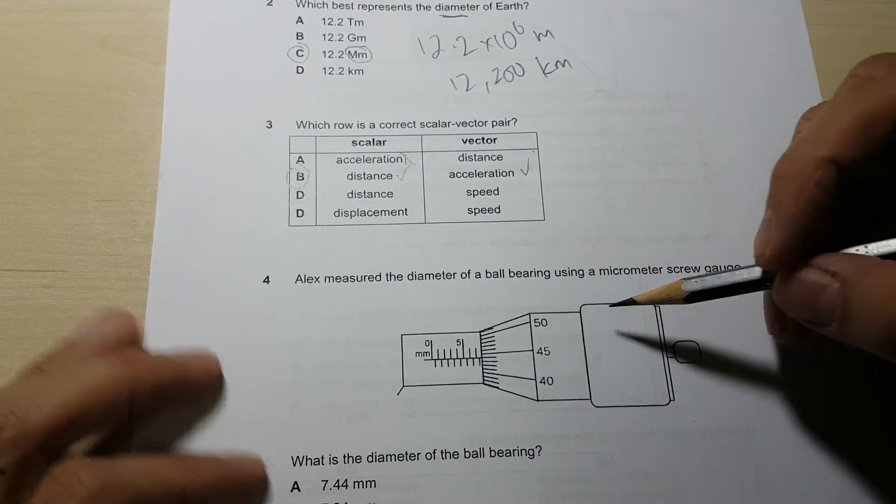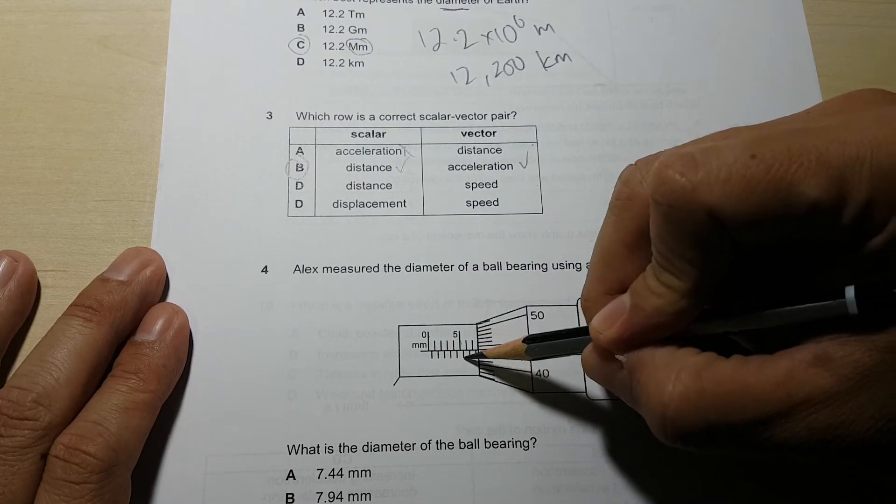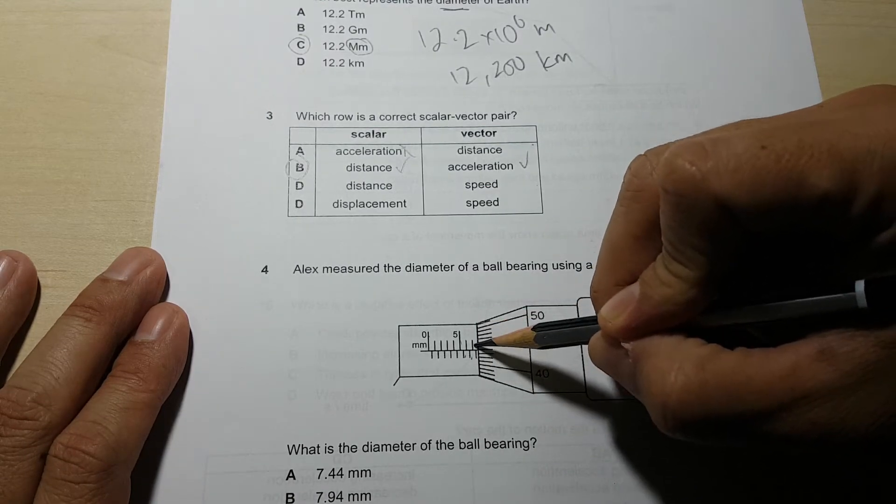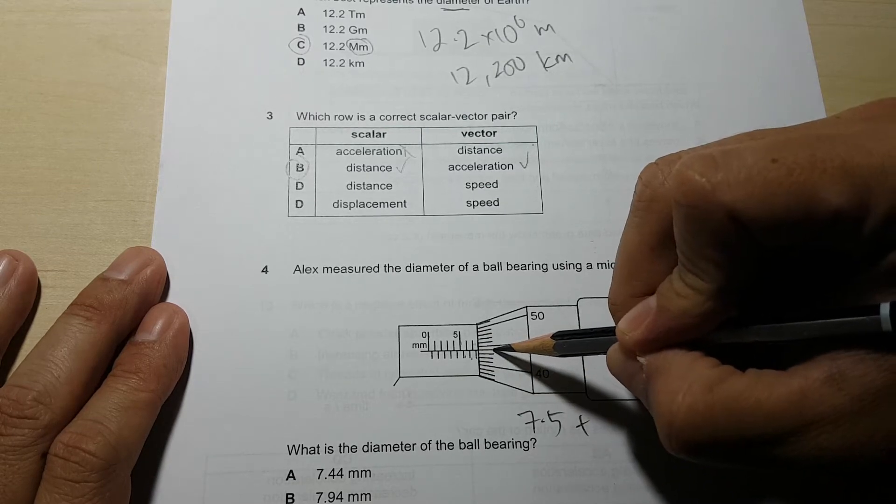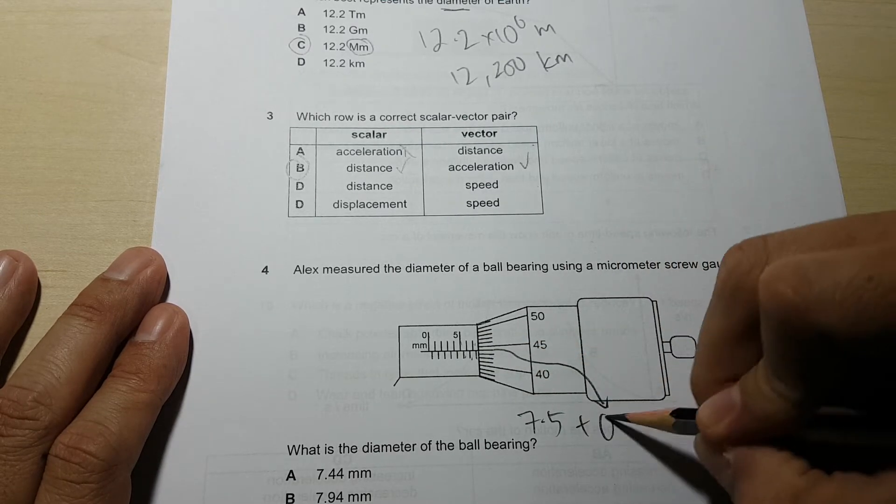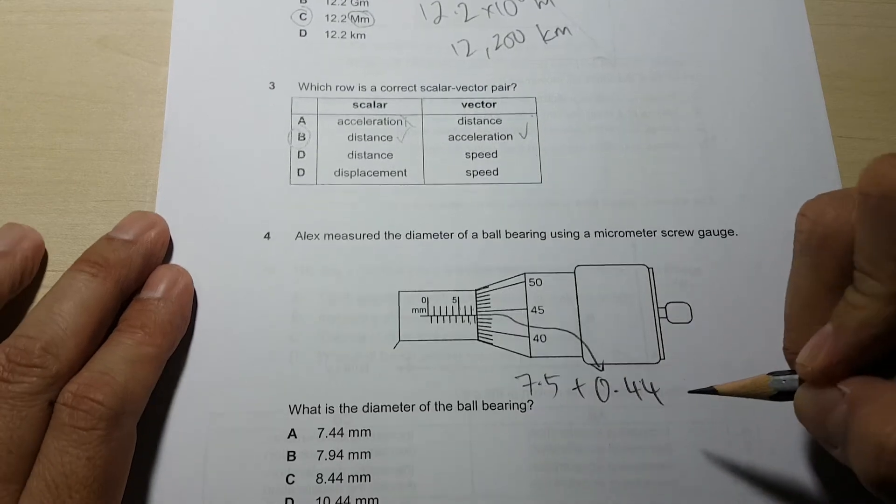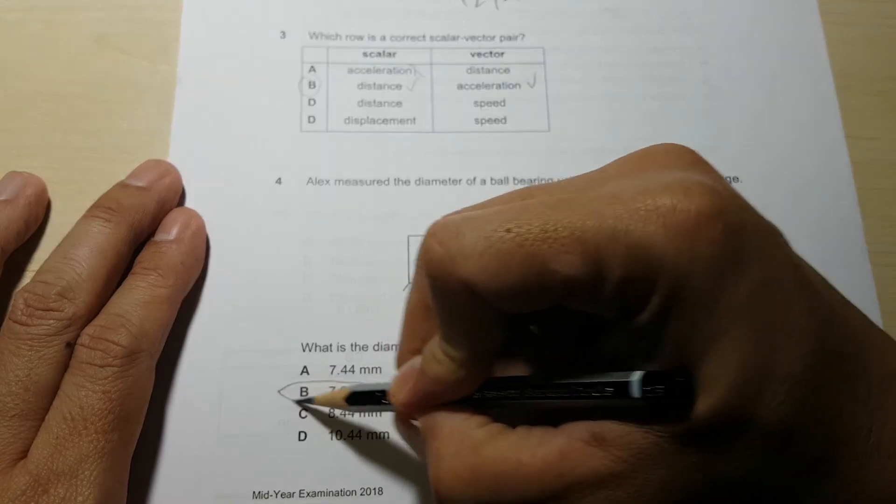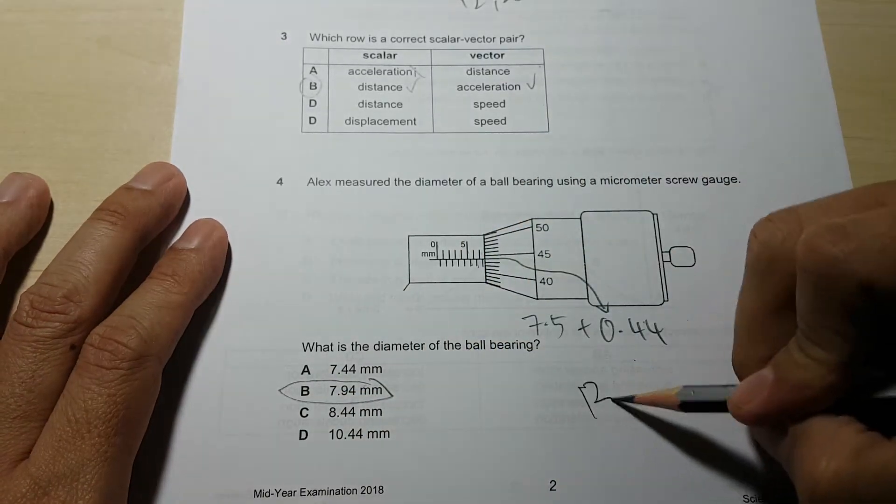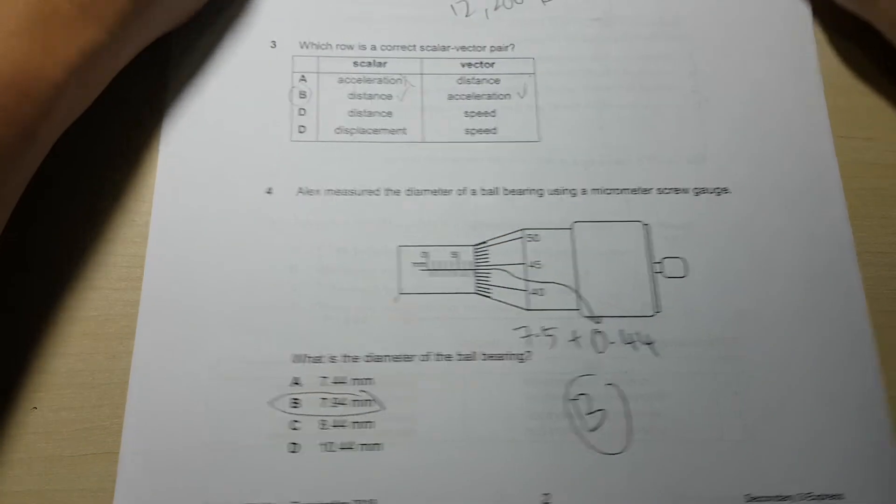Question 4, how do we read this? This is 5.5, 6, 6.5, 7, 7.5, so it's 7.5 plus the number that intersects is 0.44. So the answer is 7.5 plus 0.44 gives us 7.94. So answer B.